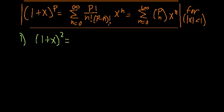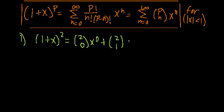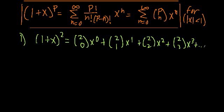So if we write this out with our Maclaurin series, that means this is equal to p choose n, starting with p choose 0 times x to the 0, plus 2 choose 1 times x to the first power, plus 2 choose 2 times x squared, plus 2 choose 3 times x cubed, and so on. Now let's work out what all these binomial coefficients are.